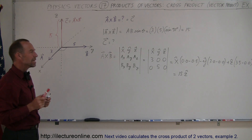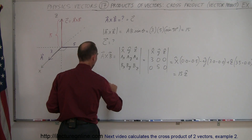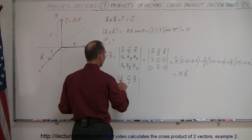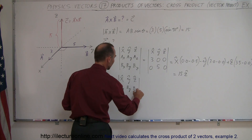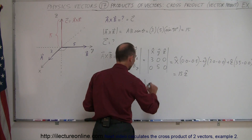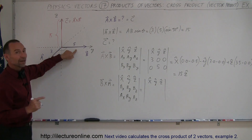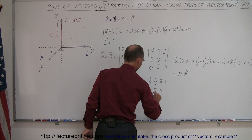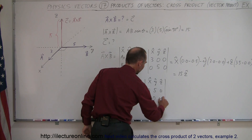Now let's compute B cross A to see if we get negative 15. We set up the same determinant with x, y, z in the first row, but this time the B vector goes first: b_x = 0, b_y = 5, b_z = 0. Then the A vector: a_x = 3, a_y = 0, a_z = 0.